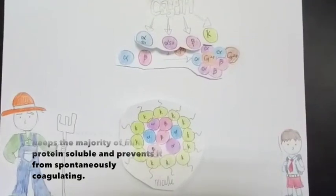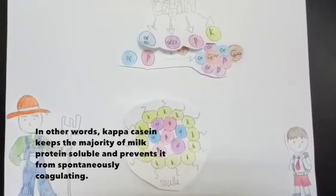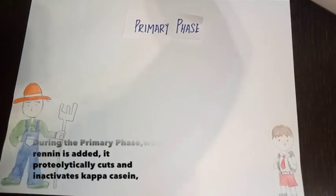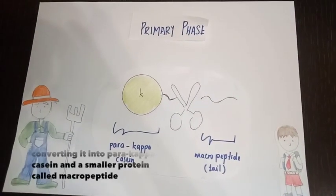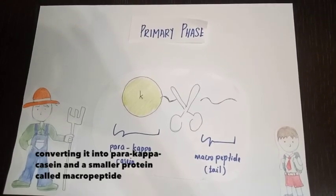In other words, kappa casein keeps the majority of milk protein soluble and prevents it from spontaneously coagulating in their primary phase. When renin is added, it proteolytically cuts and inactivates kappa casein, converting it into para-kappa casein and a smaller protein called micropeptide.